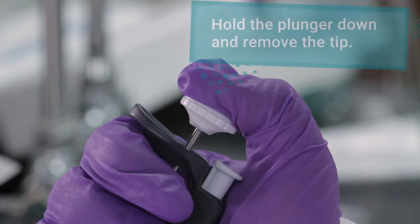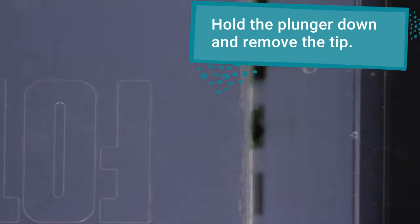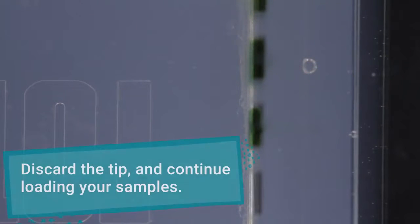With the plunger still depressed, remove the pipette tip from the well. Discard the tip and continue loading the rest of your samples.